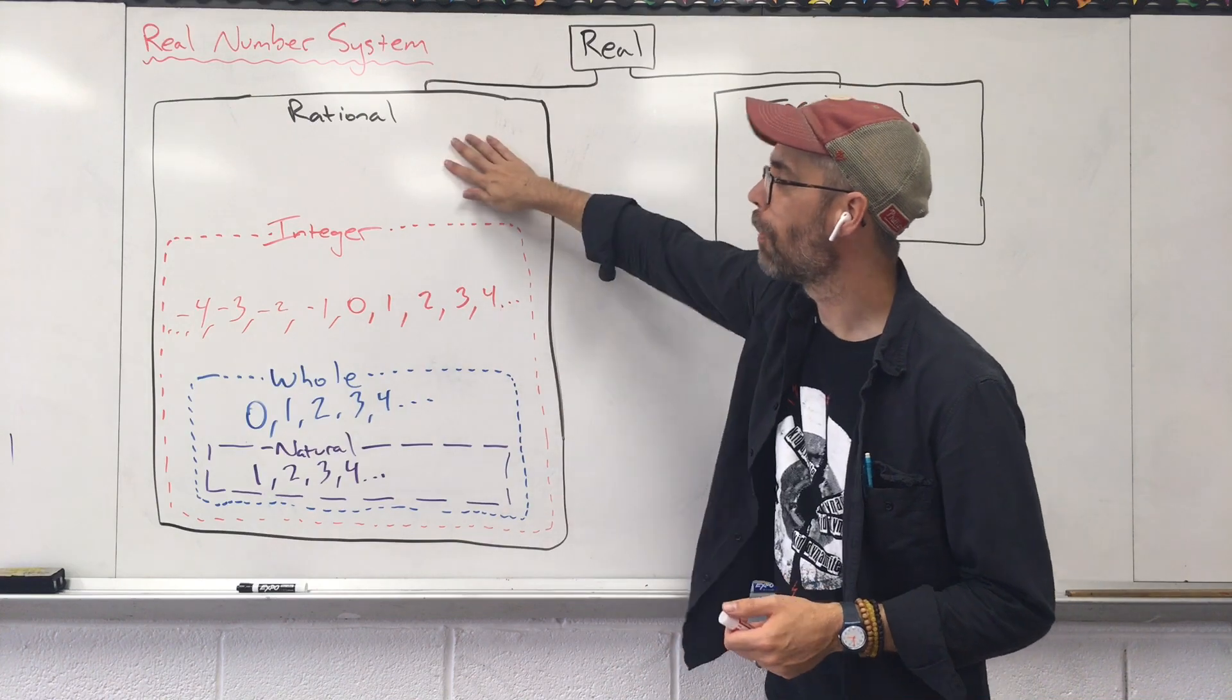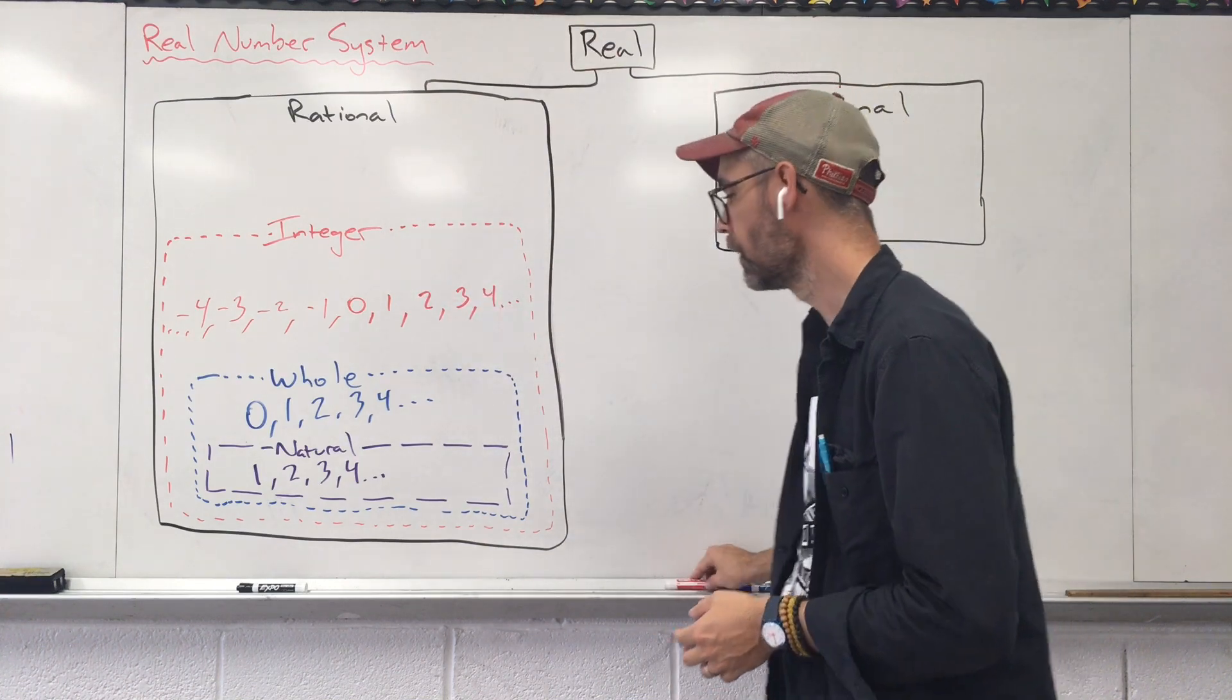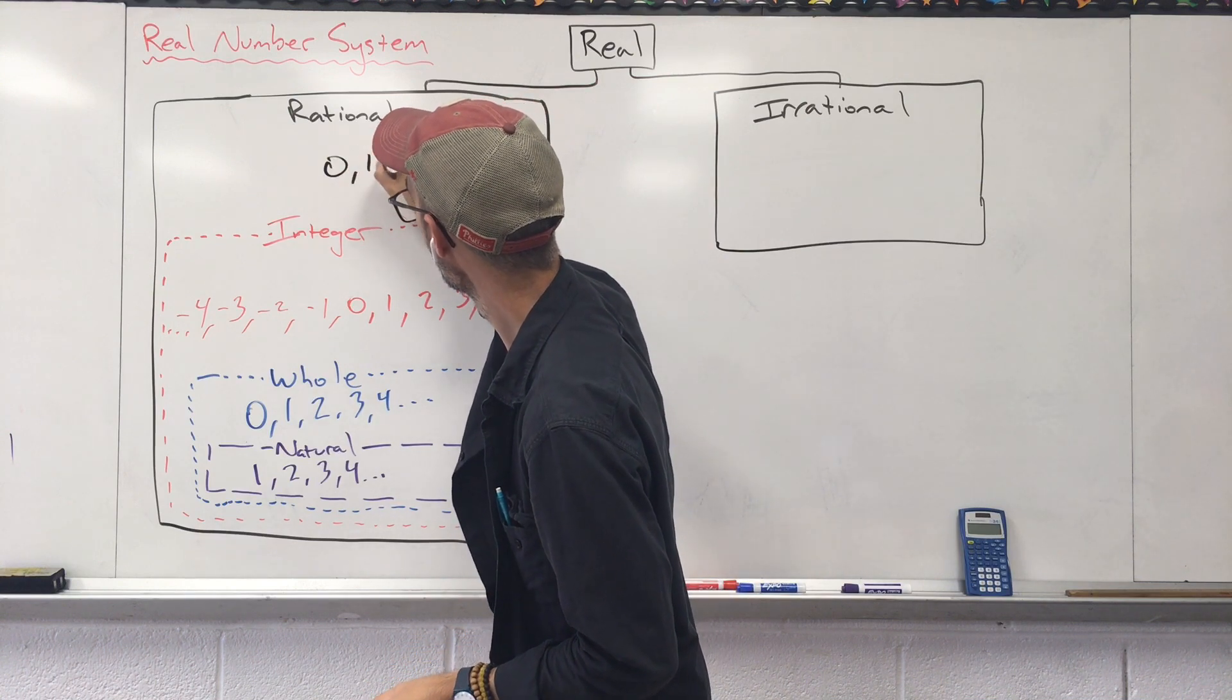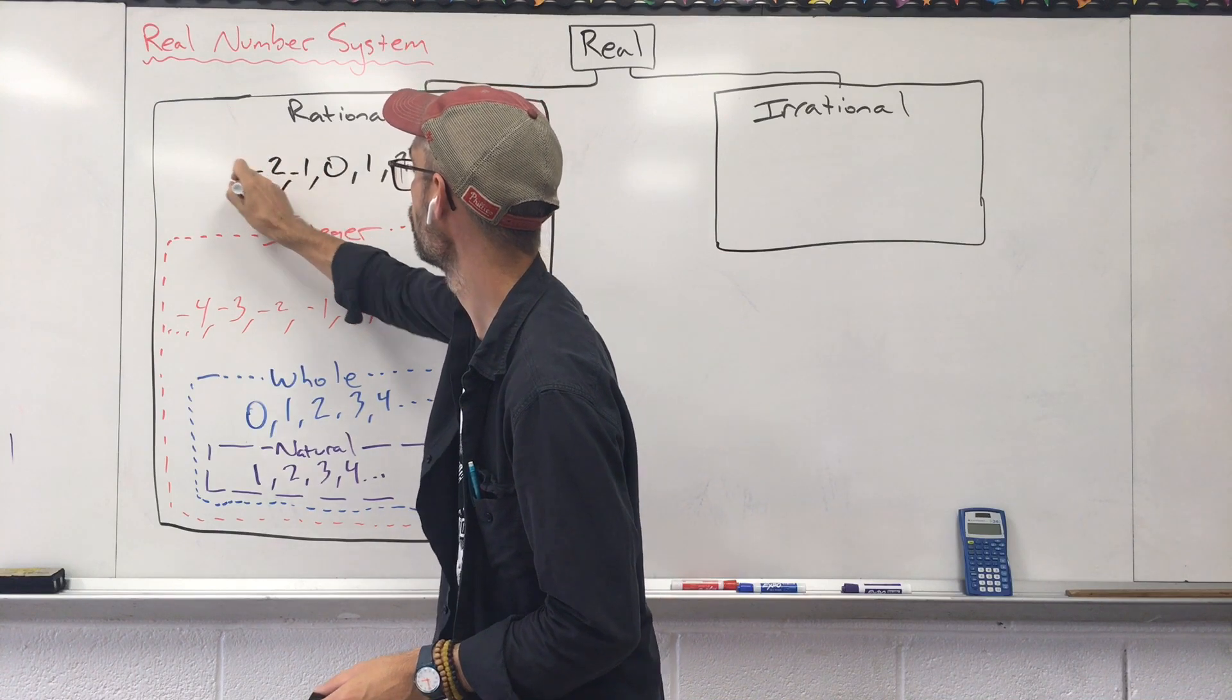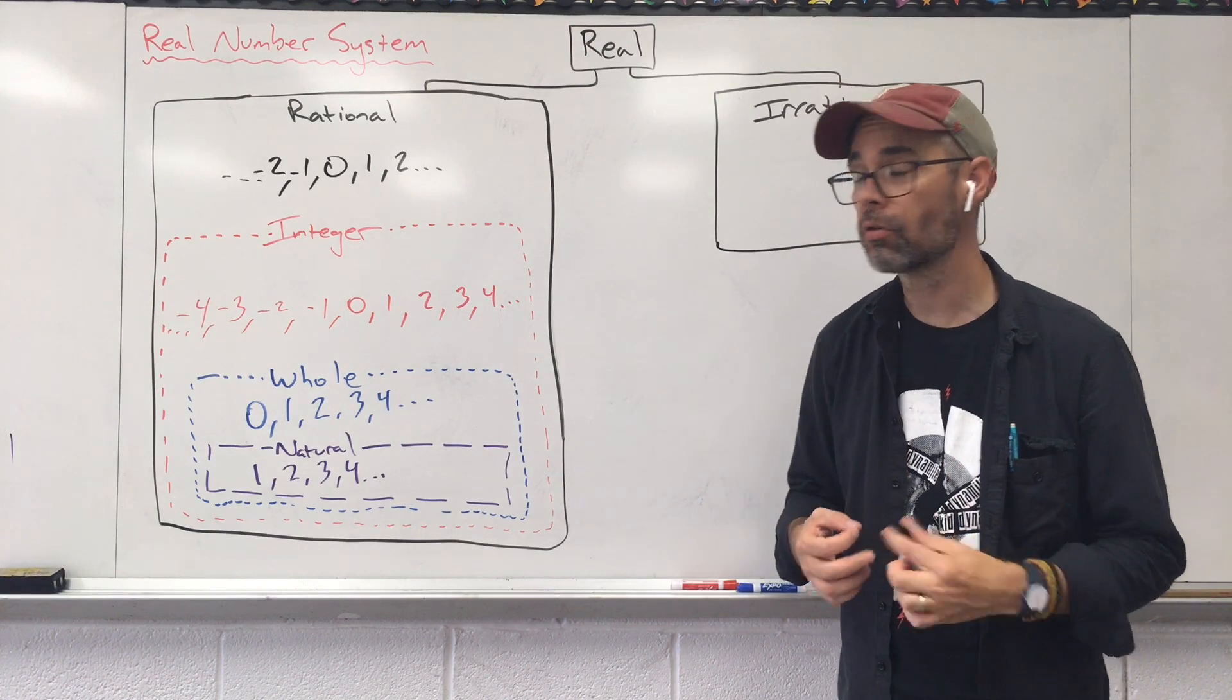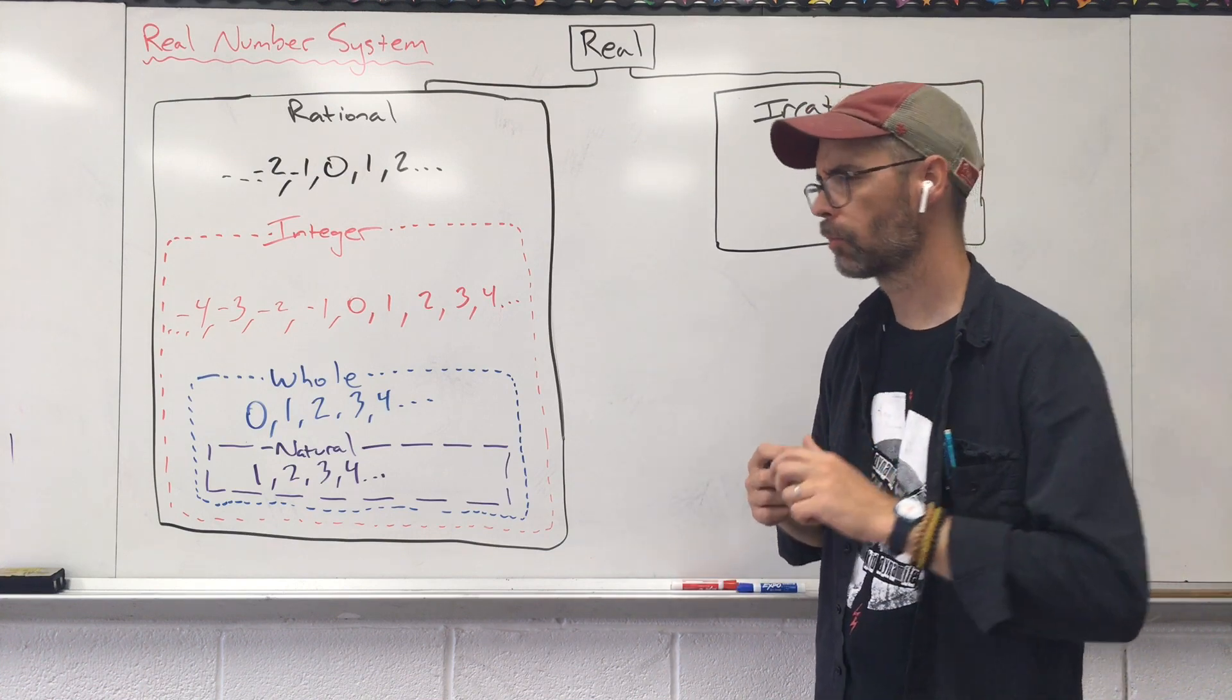What about this big box rational? Well, rational includes everything we have before it. So let's rewrite everything. I'm going to say zero, one, two. I'm just going to leave it there. Negative one, negative two, and go that way. Now we need to add some more numbers here. What are the numbers that we can add into rational? Here's where we add fractions and decimals.